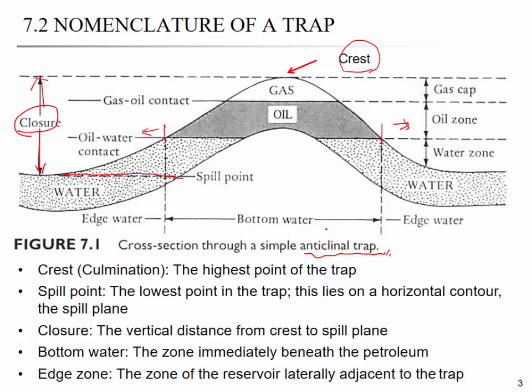In the vertical layer, you have a gas cap, oil zone, and water zone. The contact between gas and oil is GOC — gas and oil contact — and here you have oil and water contact, or OWC.